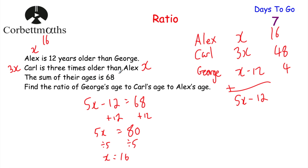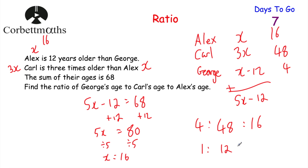The question asks for the ratio of George's age to Carl's age to Alex's age, which is 4 to 48 to 16. All three numbers are divisible by 4: 4 divided by 4 is 1, 48 divided by 4 is 12, and 16 divided by 4 is 4. So the ratio of George's age to Carl's age to Alex's age is 1 to 12 to 4. Well done if you got that.